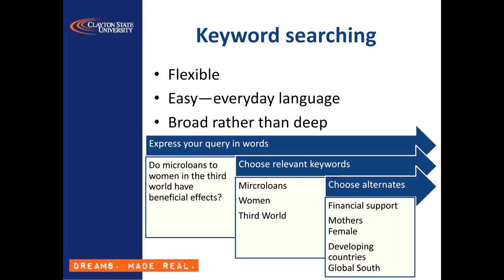First, start by expressing your search topic as a question. This also helps you to think about whether your topic is too broad or too narrow for the scope of your project. You don't want to be writing a five-page paper on a question that could reasonably take a dissertation to answer, or vice versa. Next, pull out the two or three most semantically relevant words. Because computers don't speak English, these are the only words that really count. Then think of related words that you can switch in as alternates to the search terms — synonyms, broader or narrower concepts, basically any other words an author might use when talking about the topic.